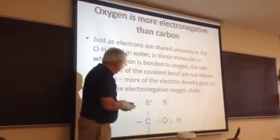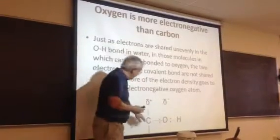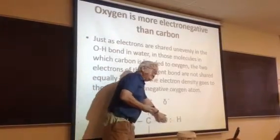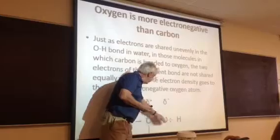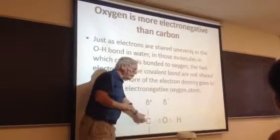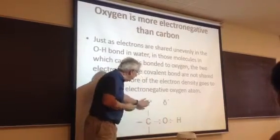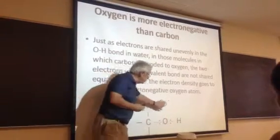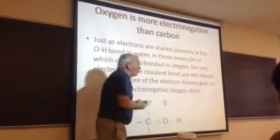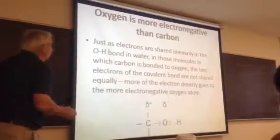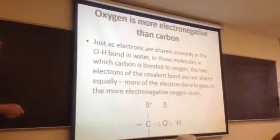If you look at where the electrons are, they're mostly around the oxygen, not so much around the carbon. So the carbon would have a partial positive charge, the oxygen a partial negative charge.